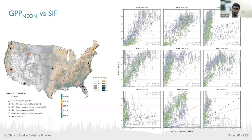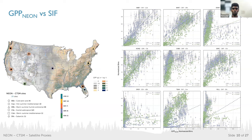Similarly, we overlaid SIF in green bins. Compared to kNDVI, SIF outperforms all other proxies — irrespective of PFT background and climate background, it tends to go along with CTSM at most sites. However, for higher canopy architecture such as deciduous broadleaf and evergreen sites, SIF tracks the observations rather than the model.